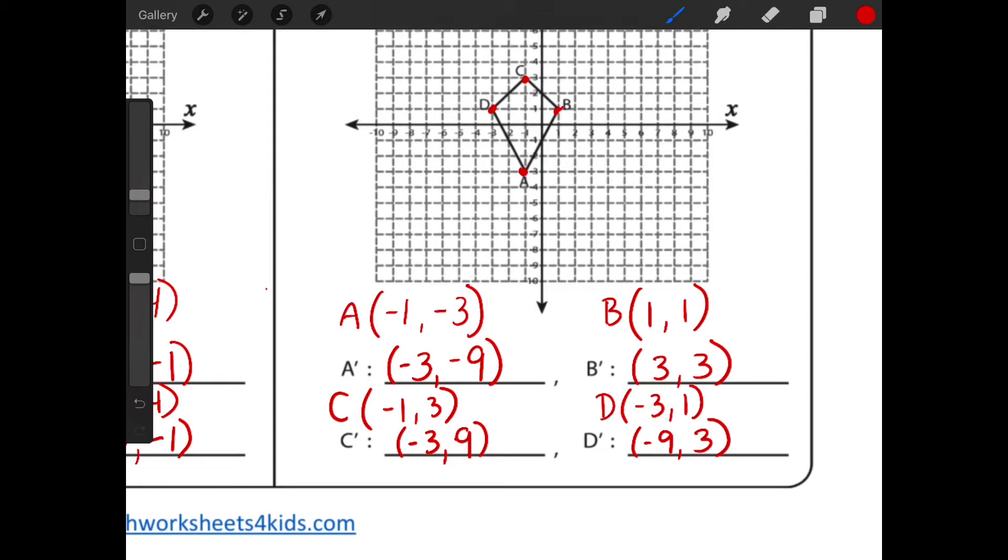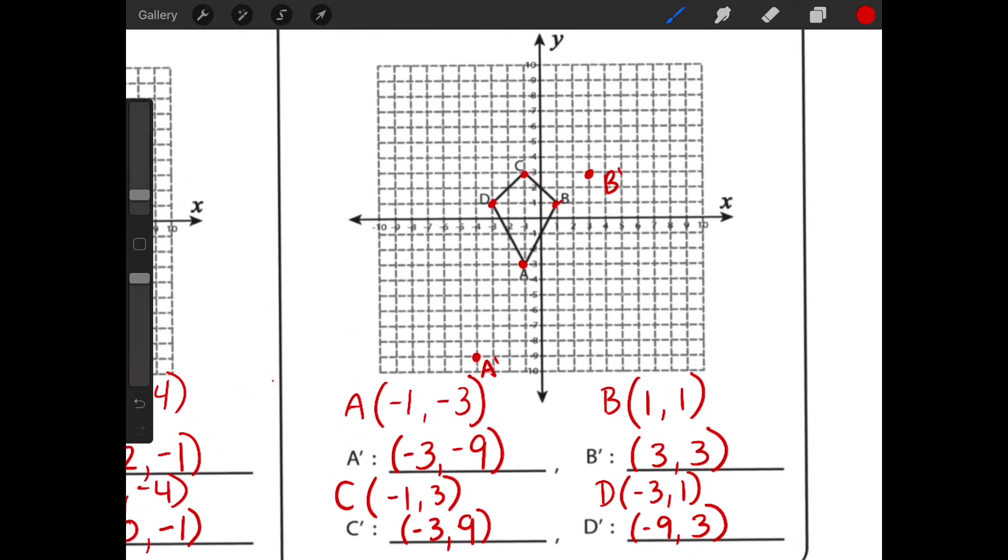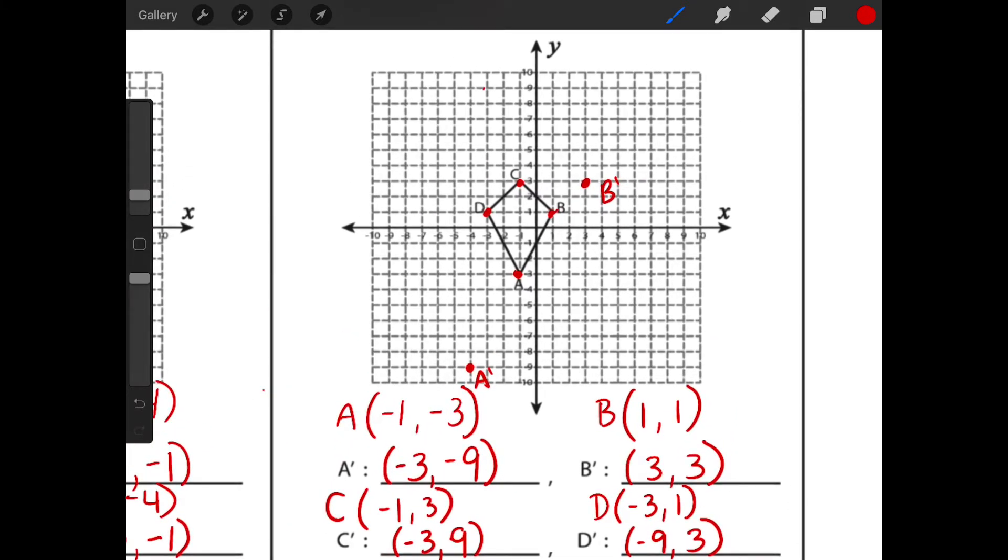And now I can plot my points so my A prime is at negative 3, negative 9. A prime. My B prime is at 3 positive 3, there's my B prime, make sure we label it. And I have negative 3, positive 9 is my C prime, and my last one D prime is negative 9, positive 3. And my final step is to connect it, and I create this very, very large kite looking shape.